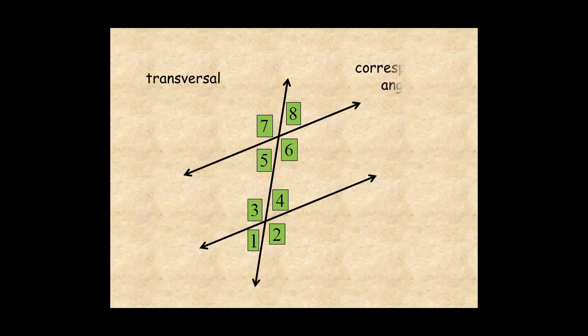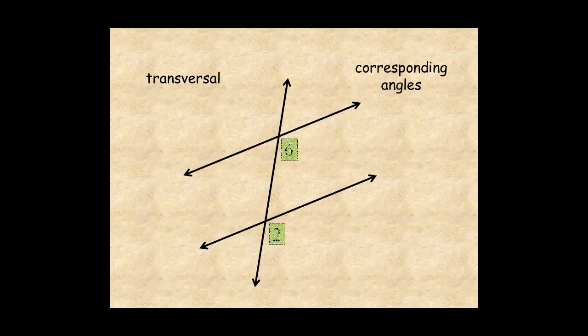Corresponding angles are angles on the same side of the transversal in corresponding positions. In this diagram, angle 1 and angle 5 are corresponding, as are angles 2 and 6, 3 and 7, and angles 4 and 8.